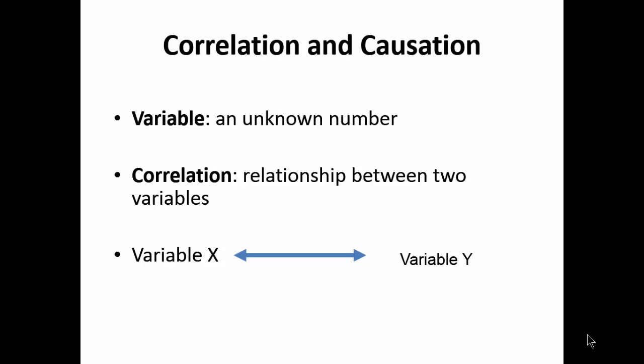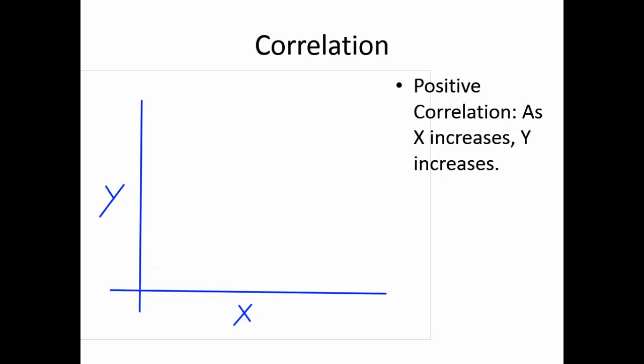Let's talk about correlation and causation, and start off with correlation. A correlation is a relationship between two variables — in general we'll refer to them as X and Y. A correlation is a relationship; one doesn't necessarily cause the other, and so it's shown by a double-headed arrow.